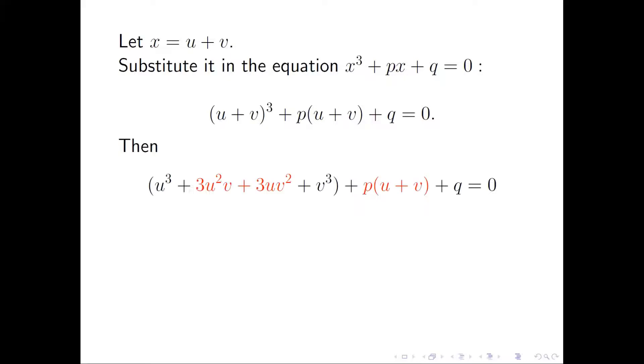We expand the first cubed term. We have u cubed plus 3u squared v plus 3uv squared plus v cubed plus the rest of the terms. We rearrange the first four terms. We have u cubed plus v cubed, then combine the second and the third terms.